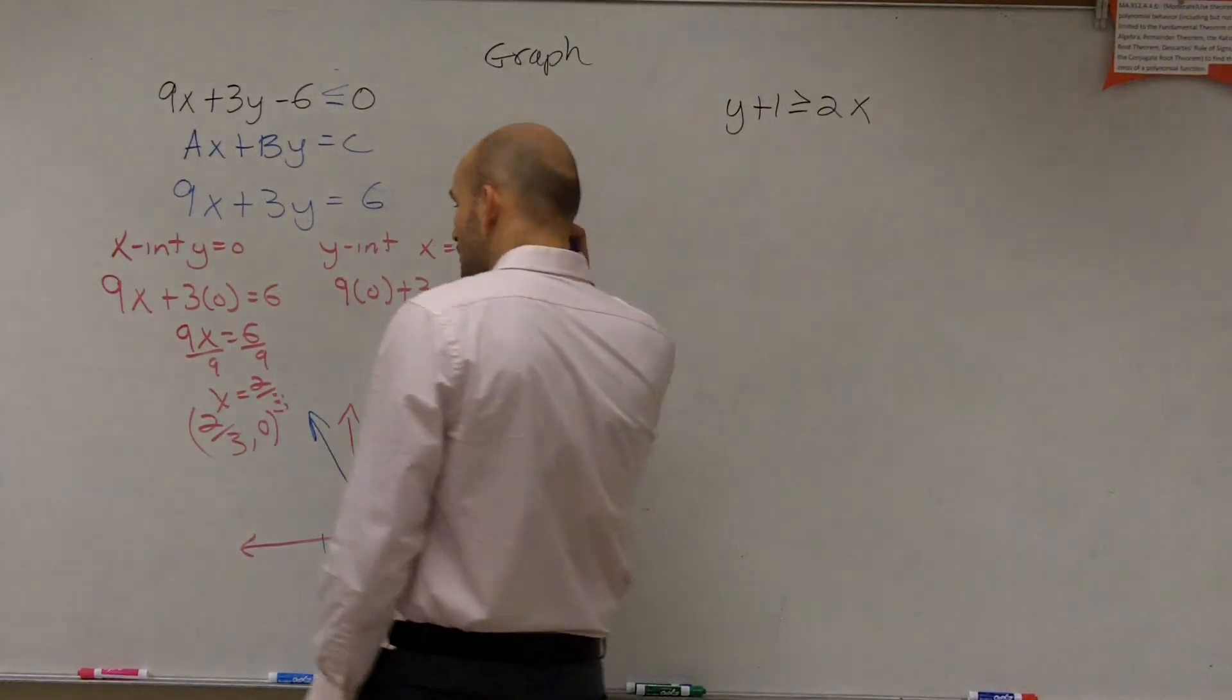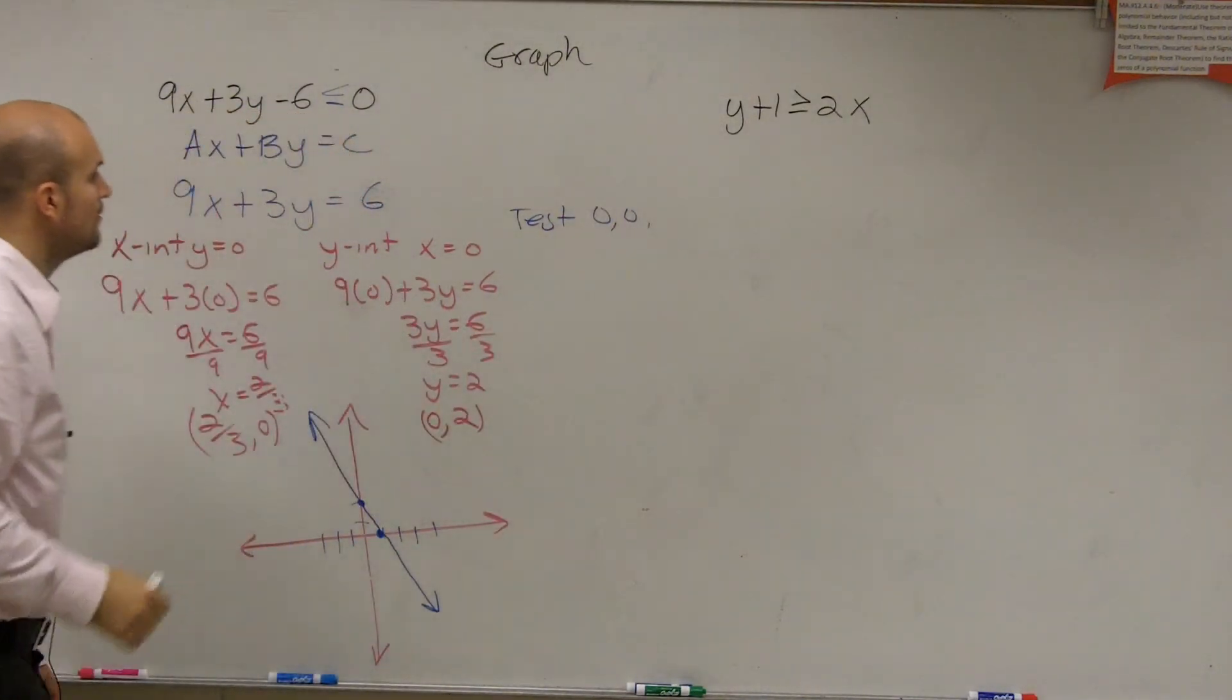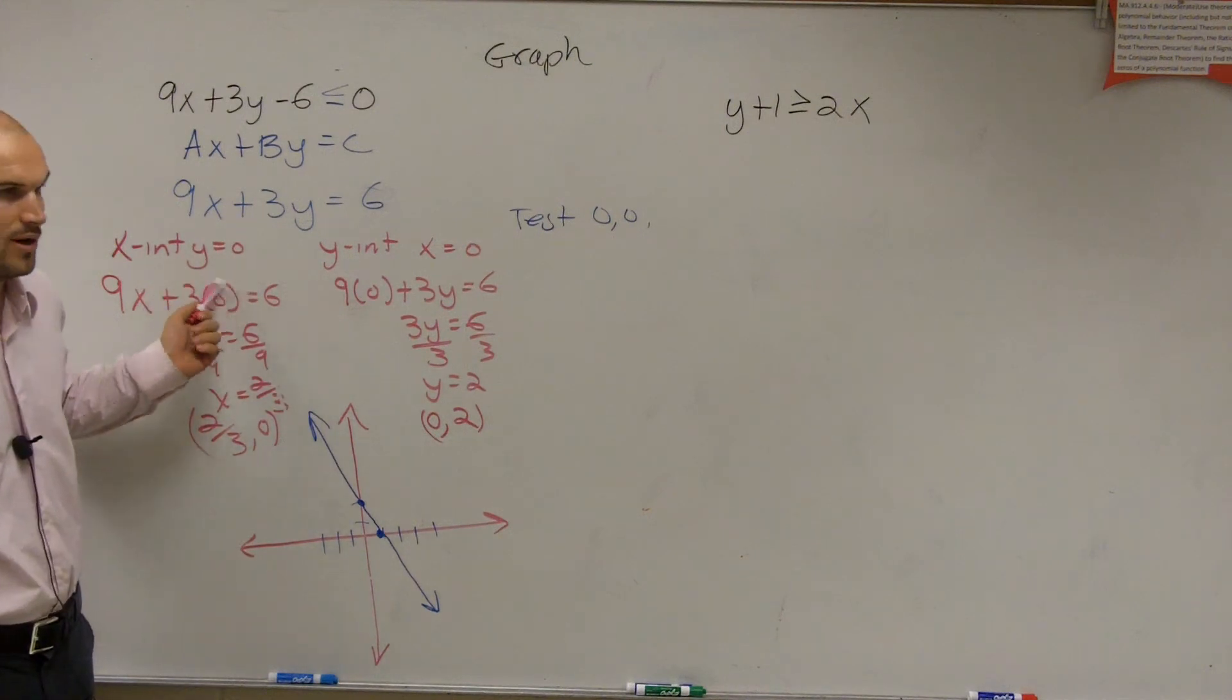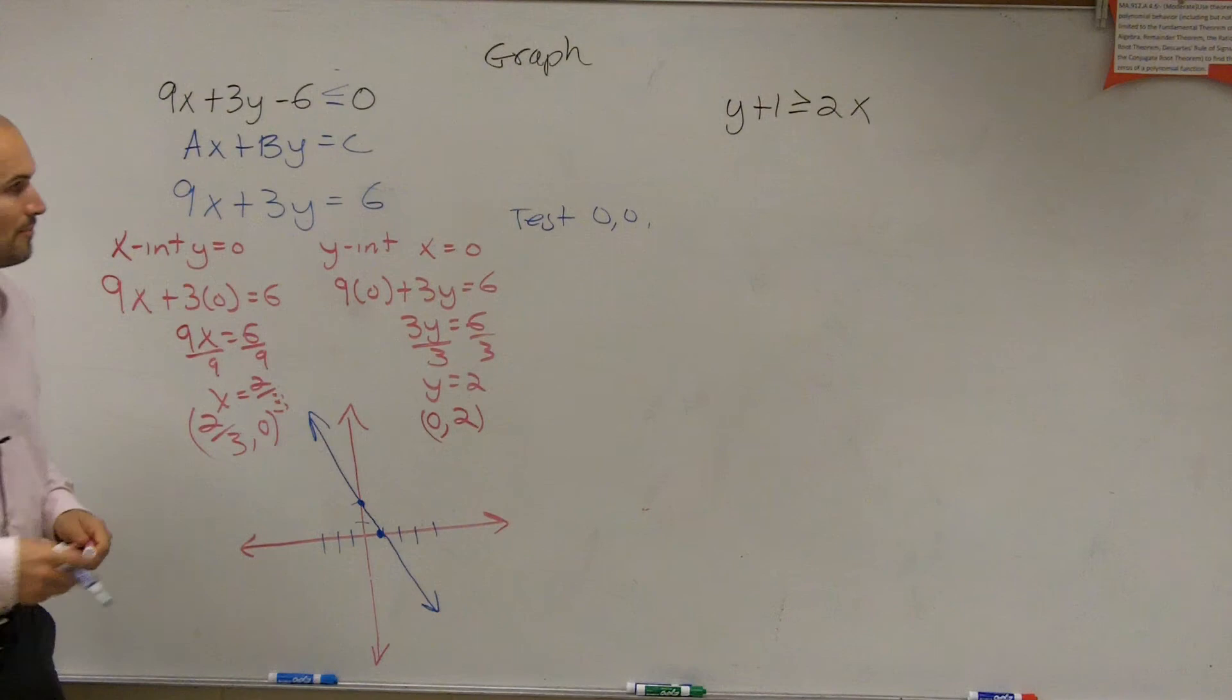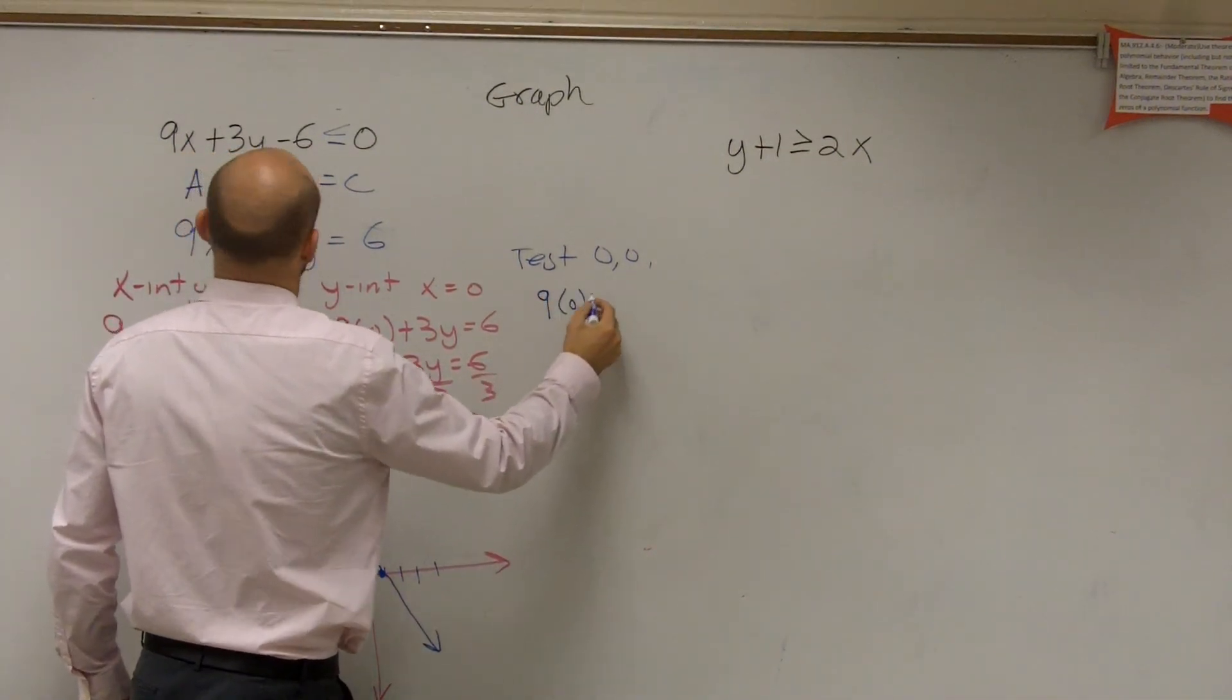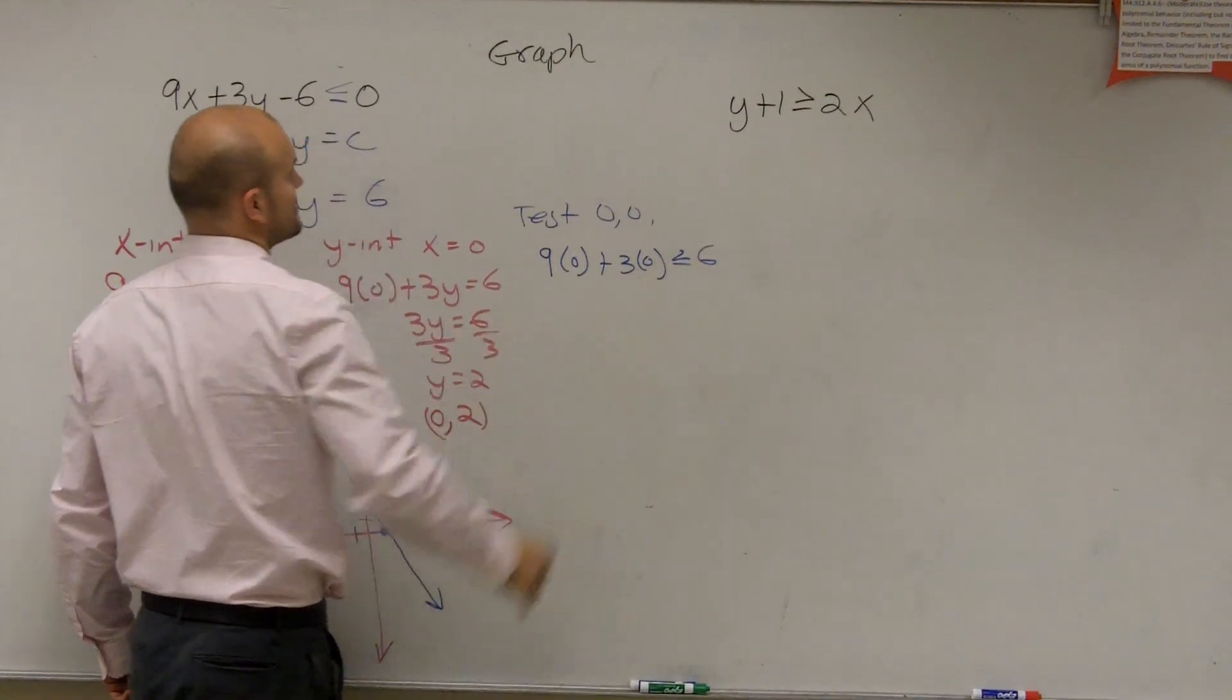So what we do is we say test 0, 0. And what you do is you put a 0 in for x. So now for the x-intercept, you put a 0 for the y. For the y-intercept, you put a 0 for the x. To test it, we're going to put a 0 for both of them. So you do 9 times 0 plus 3 times 0 is less than or equal to a positive 6.